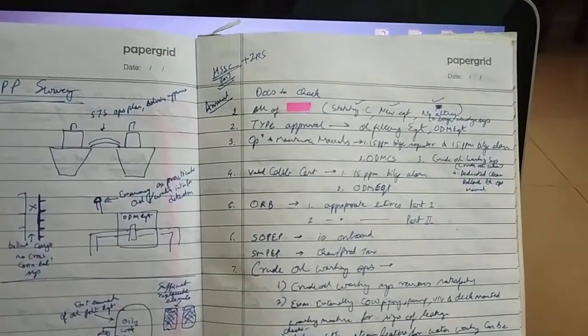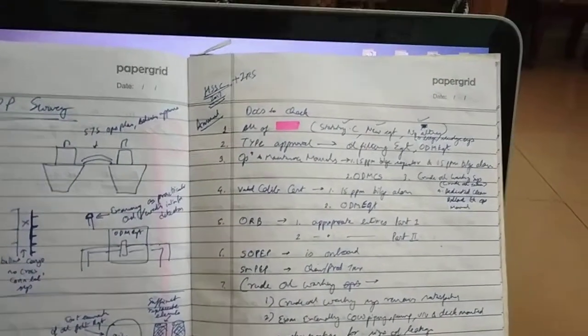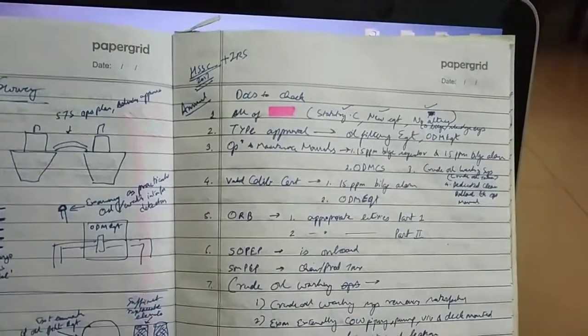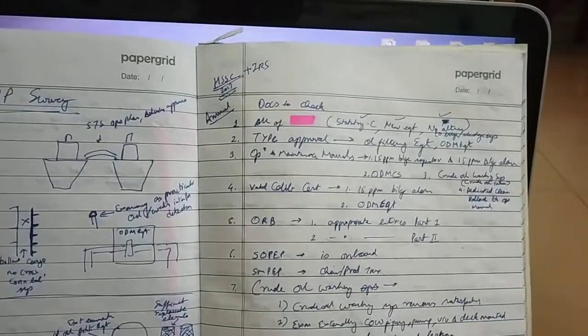I have taken most of the points from the HSSC 2017 document - that is, harmonized system of survey and certification - and also I referred the IRS document for the IOPP survey. As for any survey, we'll start with the documentations. First point to remember: